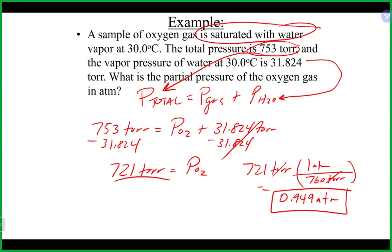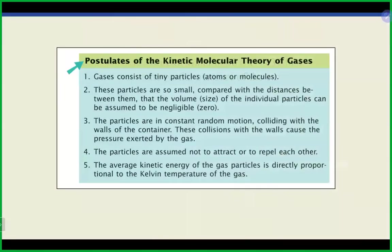We saw three different partial pressure situations. Most commonly you'll use the ideal gas law approach; if it's experimental or based on collecting a gas, you'll use the water vapor correction; and the mole fraction approach may come up as well. Now let's finish the chapter with the Kinetic Molecular Theory of gases. You need to know the different parts of it, as some of these are really what makes something an ideal gas. We assume all gases behave ideally in this class; in Chemistry 1A, you'll talk about real, non-ideal gases.